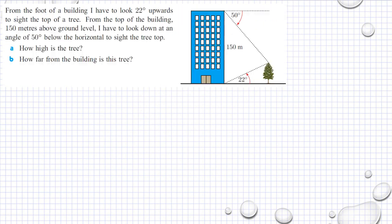The last example that I'm going to discuss is this one. From the foot of a building, I have to look 22 degrees upwards to sight the top of a tree. From the top of the building, 150 meters above ground level, I have to look down at an angle of 50 degrees below the horizontal to sight the tree top.